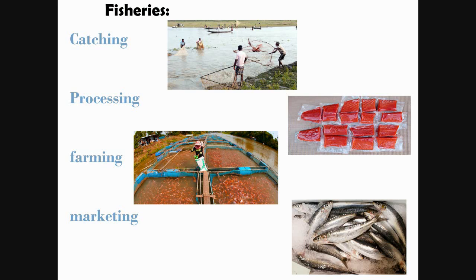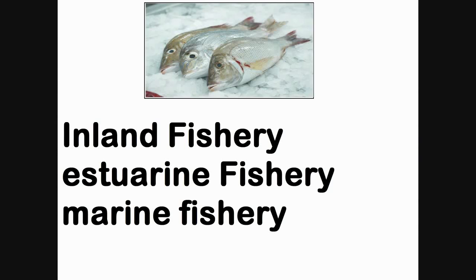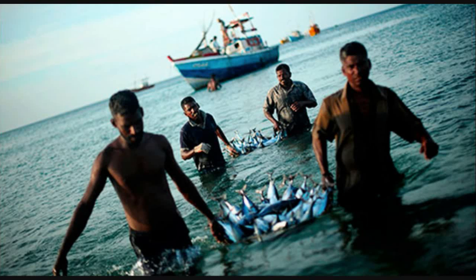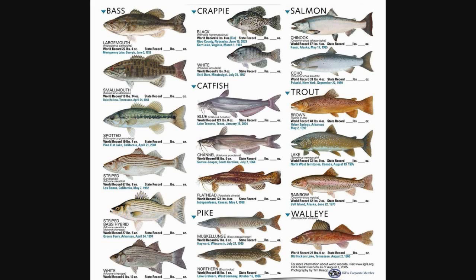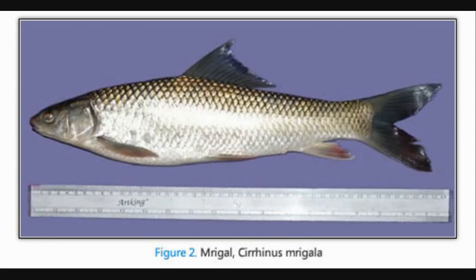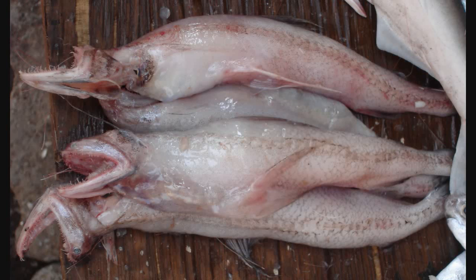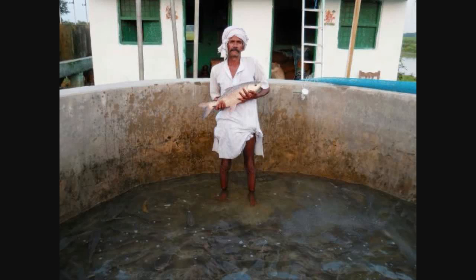Fishery involves catching, processing, fish farming, and marketing of fish and other related aquatic animals. It mainly includes fishes, prawns, lobsters, oysters, mussels, and crabs. There are three branches: inland fishery, estuarine fishery, and marine fishery. Fishery provides job opportunities and employment to many people in coastal areas. Common freshwater fishes include Labeo rohita, Catla catla, Cirrhinus mrigala, and other carps. Commonly consumed marine fishes include Harpodon nehereus, Sardinella, Rastrelliger kanagurta, and Stromateus.